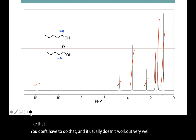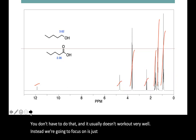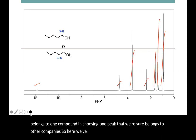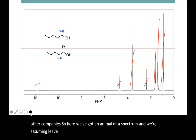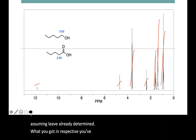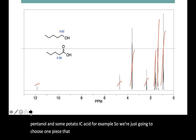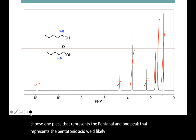Instead, what we're going to focus on is just choosing one peak that we are sure belongs to one compound, and choosing one peak that we're sure belongs to another compound. So here we've got an NMR spectrum, and we're assuming that you've already determined what you've got in the spectrum — you've already decided you've got some one-pentanol and some pentanoic acid, for example. We're just going to choose one peak that represents the pentanol and one peak that represents the pentanoic acid. We'd likely pick peaks that are isolated in the spectrum, that are far apart from others.